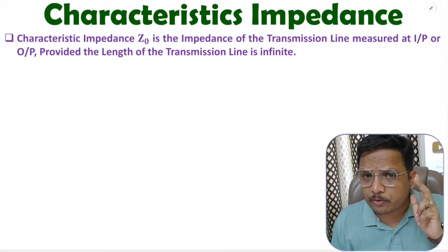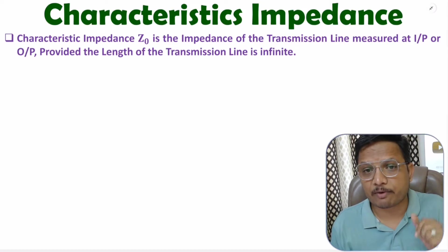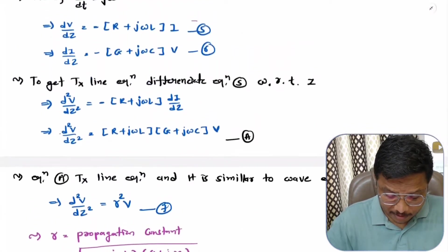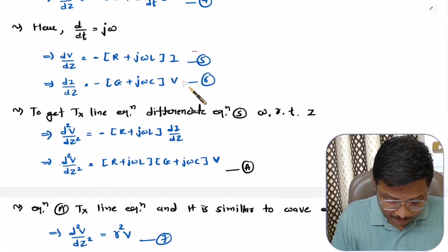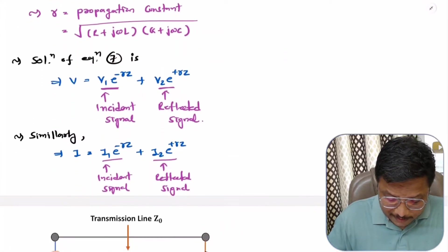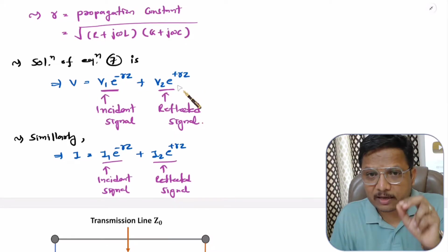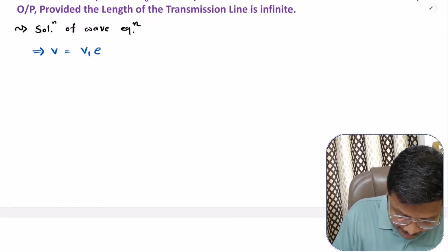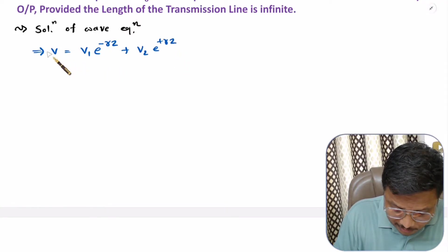To derive characteristic impedance we need support from my previous videos in this microwave engineering lecture series. In my previous video I explained transmission line equations in the form of dv/dz and di/dz, and based on these equations we derived the solution of the voltage wave equation: V = V1·e^(−γz) + V2·e^(+γz). This is the solution of the wave equation and we need it to derive characteristic impedance.